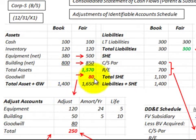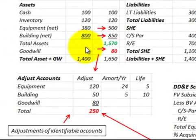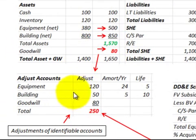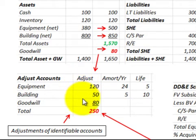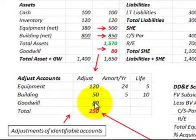We also have goodwill in this transaction, and that has to be accounted for as well. Let's look at how we'd set up an adjusted account schedule — adjustments to the identifiable accounts. This would include all the accounts adjusted from book value up to fair value, but for our example we'll just look at equipment, buildings, and goodwill.